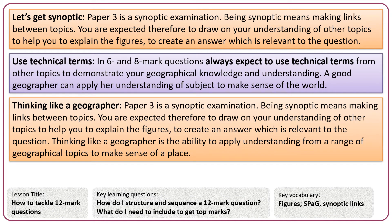Paper 3 is a synoptic examination. Being synoptic means making links between topics — you are expected to draw on your understanding of other topics to help you explain the figures and create an answer relevant to the question. In 6 and 12 mark questions, always use technical terms from other topics to demonstrate your geographical knowledge and understanding. Thinking like a geographer is the ability to apply understanding across a range of geographical topics to make sense of a place.